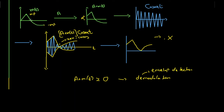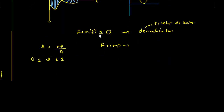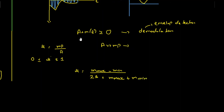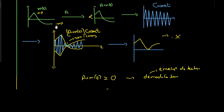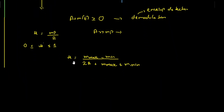When the message signal has a non-zero offset — that is, the maximum and minimum amplitudes are not symmetric — the modulation index μ is found using: μ = (max amplitude − min amplitude) / (2A + max amplitude + min amplitude). When the amplitudes are not symmetric, we use this general equation for the modulation index. Thank you.